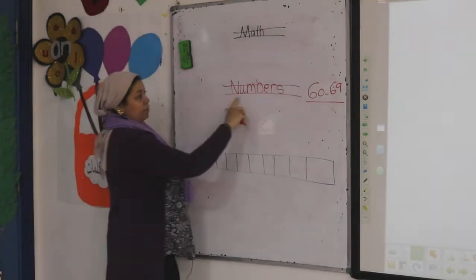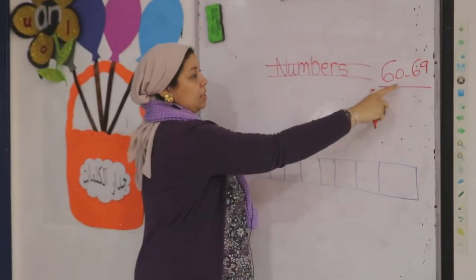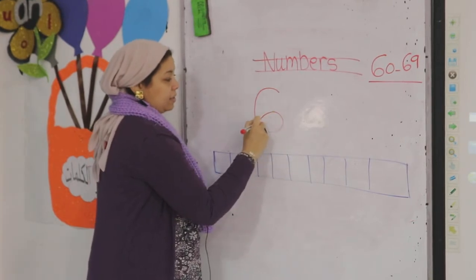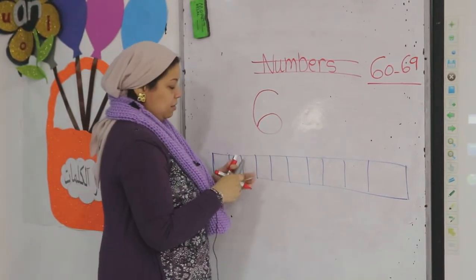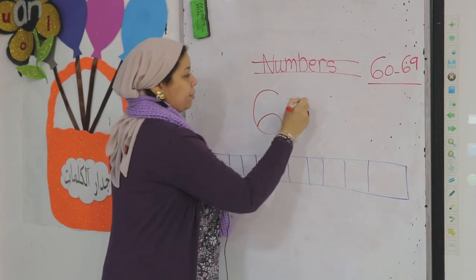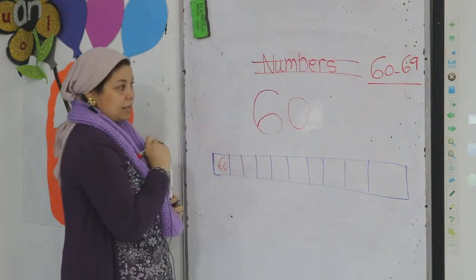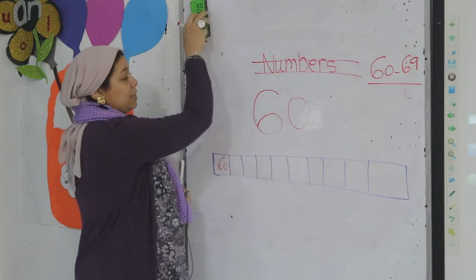Let's first write it on the board. We have numbers 60 to 69. How are we going to write 60? 6 and 0. 60. So what's the number? 60.